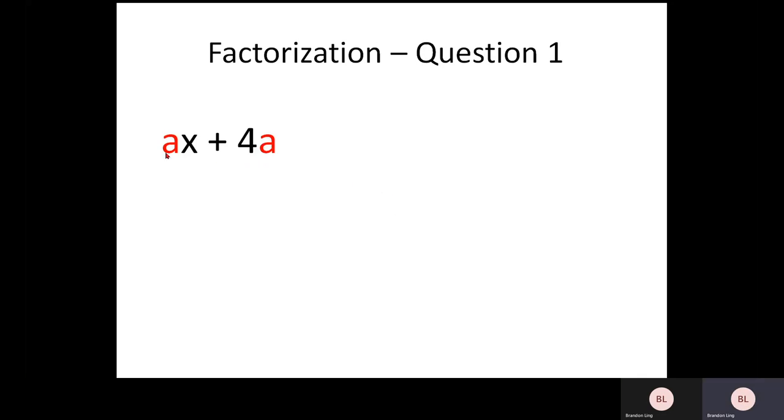So what you can do now is you can actually pull out this A out. It becomes X plus 4. So whatever that you did not pull out, it becomes inside the bracket, which is X plus 4.